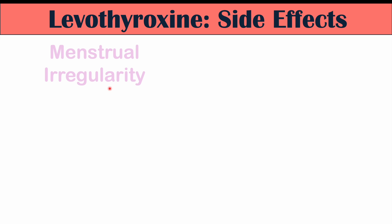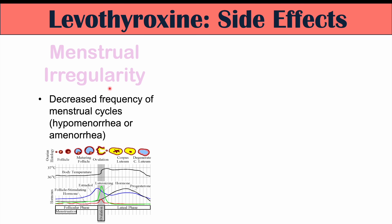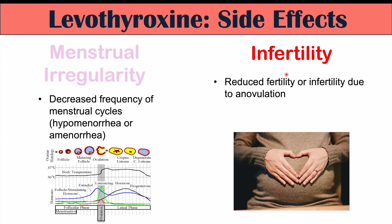Menstrual irregularity can occur with levothyroxine, as thyroid hormone can affect how other hormones act. This can lead to decreased frequency of menstrual cycles — hypomenorrhea, where periods occur less frequently, or amenorrhea, where there are no periods for many months. This is also associated with reduced fertility or infertility due to anovulation, where no egg is ovulated.